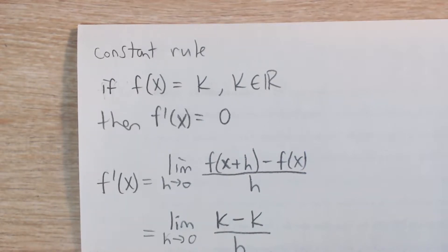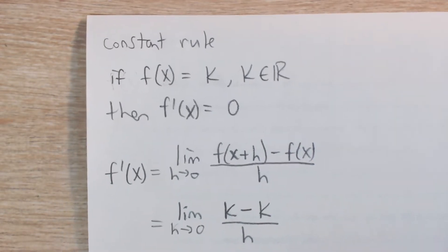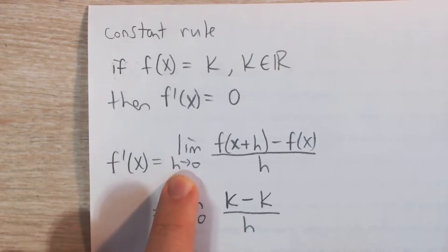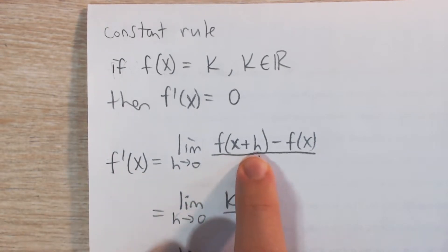But we can prove this using the limit definition of derivative, which says that the derivative of f(x) is the limit as h approaches 0 of [f(x+h) - f(x)] all divided by h.